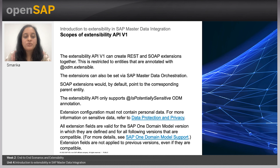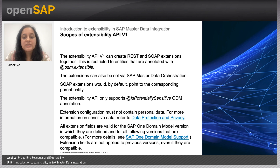The scopes of extensibility: the extensibility API V1 can create REST and SOAP-based extensions together. This is restricted to entities that are annotated with @ODM.extensible. The extensions can also be set by the SAP Master Data Orchestration UI. SOAP extensions would by default point to the corresponding parent entity.